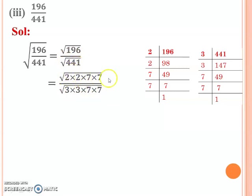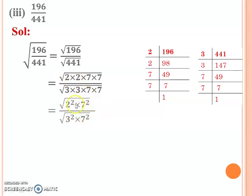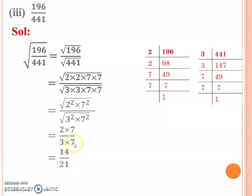After putting in the prime factors, you do the pairing. After pairing, convert to exponential form: 2² × 7² over 3² × 7². Since square and square root are opposite to each other, they cancel out. So you get 2 × 7 over 3 × 7, which gives 14 over 21. Since 7 and 7 cancel, you can also write the answer as 2 over 3.